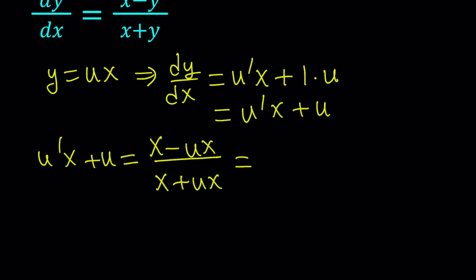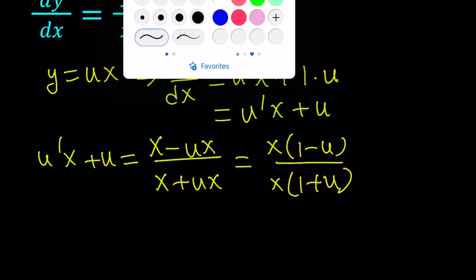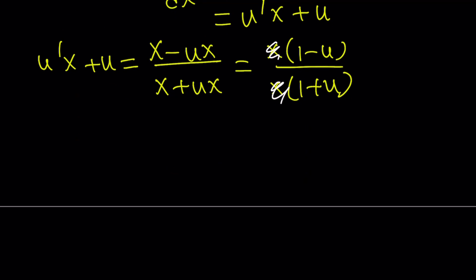I can go ahead and take out an x: (1 minus u) over (1 plus u). Obviously you don't want x to be 0, and you want to cancel out the x's here. And now we have the following: u prime·x plus u equals (1 minus u) over (1 plus u).